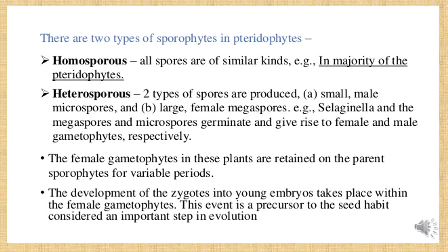After fertilization, the zygote is produced — a young individual — which undergoes further development to give rise to an embryo. The embryo is a further stage of development of the zygote, and its formation occurs inside the female gametophyte. This habit is considered an important step in evolution because it gives rise to the formation of seeds.